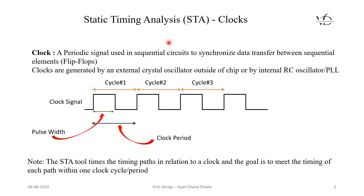So what is a clock? A clock is nothing but a periodic signal which is used in sequential circuits to synchronize the data transfer between different sequential elements like flip-flops. Clocks are basically generated either by an external crystal oscillator sitting outside of a chip, or by on-chip internal RC oscillators or PLLs.